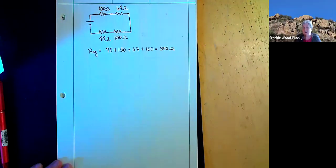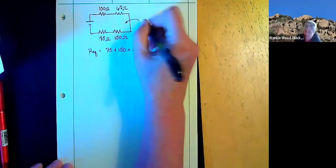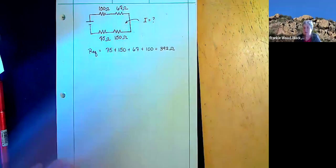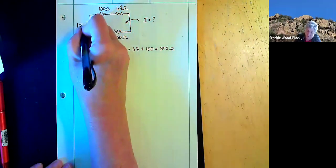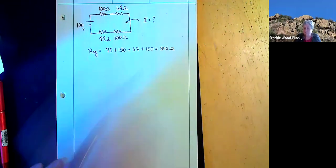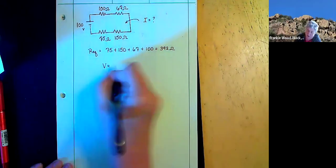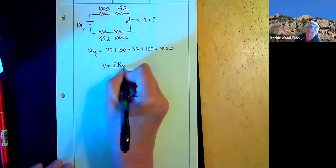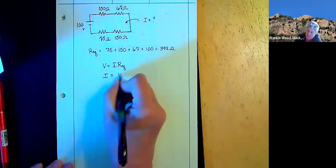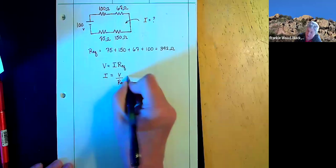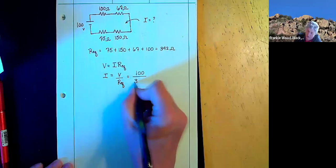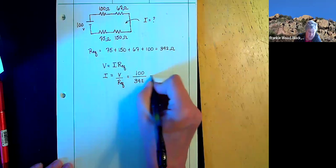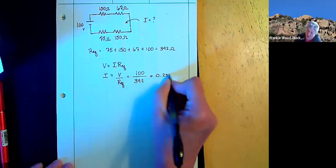Now let's find out what the current is. We might want to find what the current is in our system. If this voltage is 100 volts, we can now find out the current because V is equal to IR equivalent. Current is going to be my voltage divided by my R equivalent. So I'm going to take my 100 divided by 392 and that's going to equal 0.255 amps.